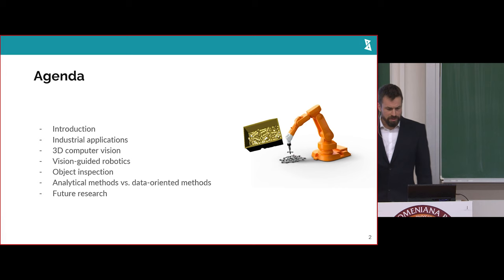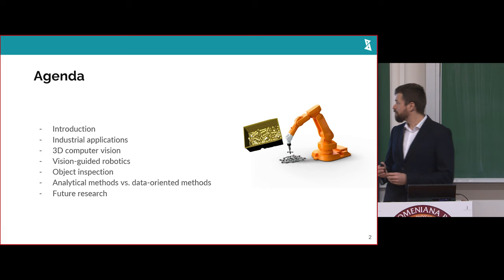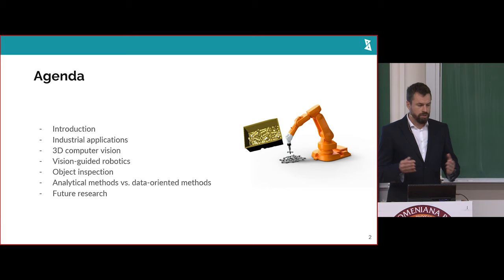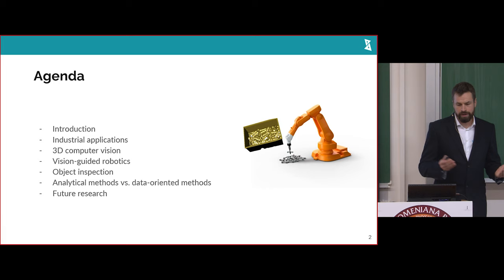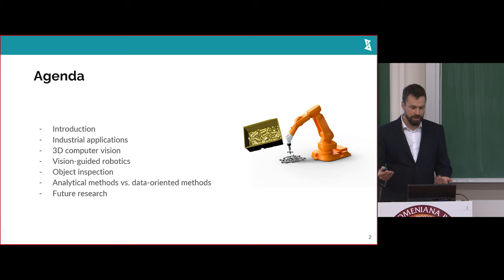I will start with an introduction and a quick overview of the research area I've been working on, and show some examples of industrial applications — mainly two groups: vision-guided robotics and object inspection. I will try to compare analytical methods with data-driven approaches, and finally show a hybrid methodology and describe some ideas for future research.